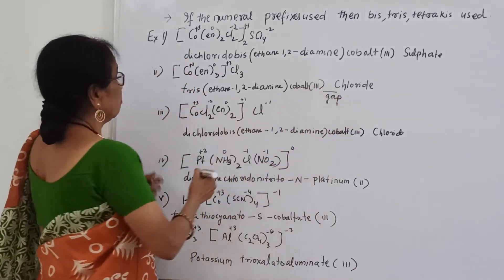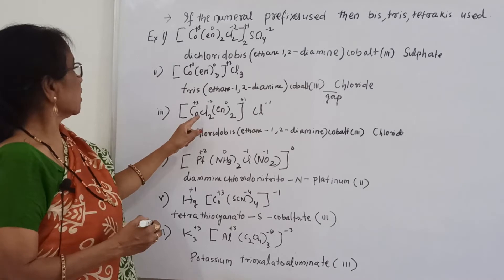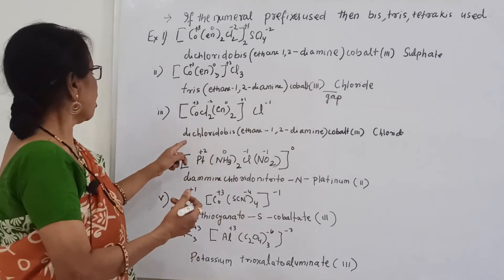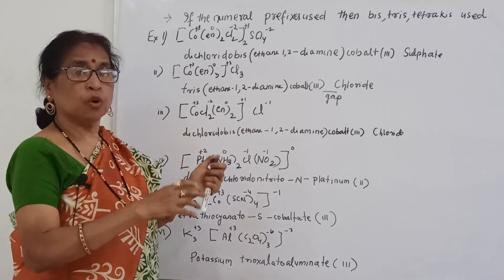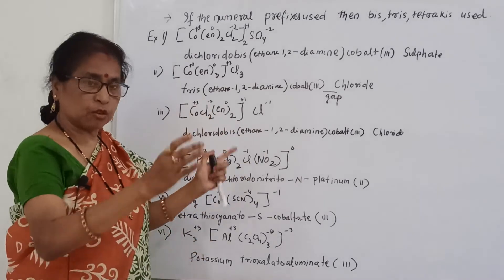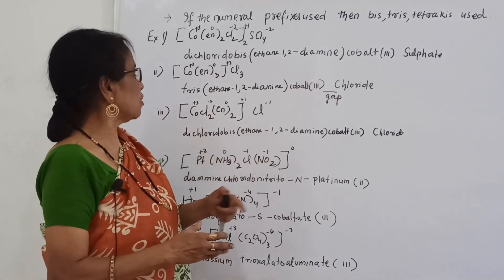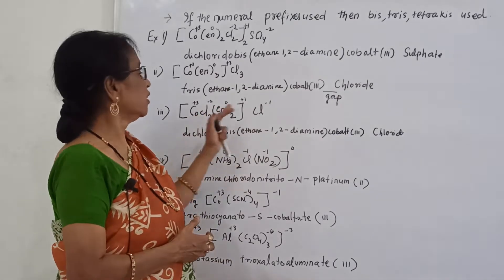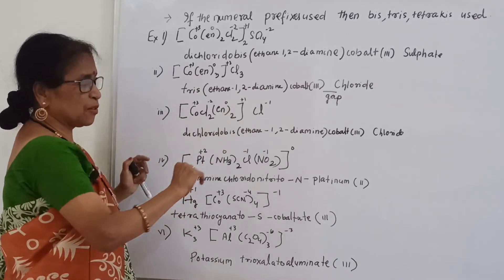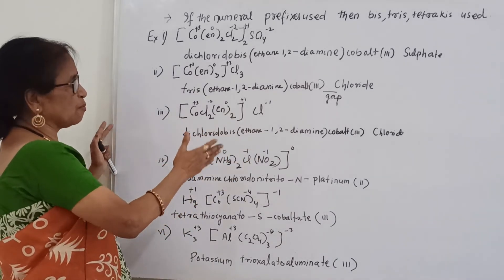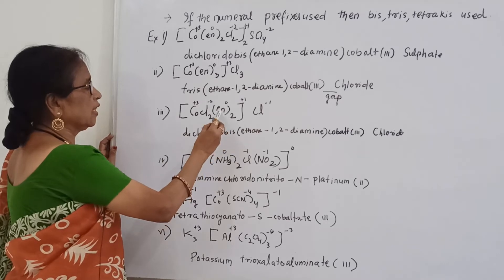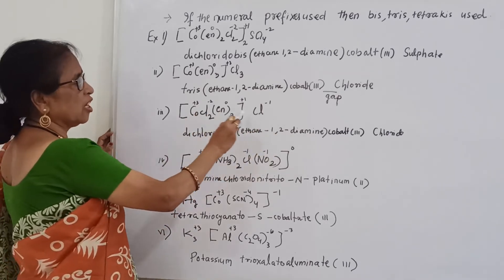For [Co(EN)₃]Cl₃: EN is neutral (0), 3 times is 'tris'. Chloride outside is −1 × 3 = −3, so cobalt is +3. Using 'tris' because 'tri' is already in 'diamine'. The name is: tris(ethane-1,2-diamine)cobalt(III) chloride. There is no gap inside the complex name; a gap appears only before the counter ion chloride.